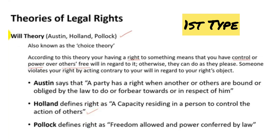If you observe Holenka's definition, you can understand that it is a right — a capacity residing in a person to control the actions of others. So in my right, in my capacity, I am making another person do something based on my will and my own imposition on the other person.